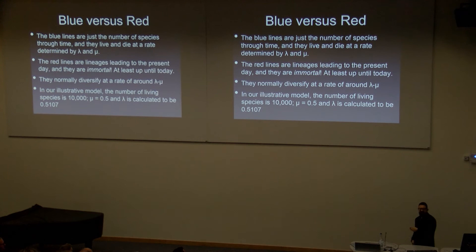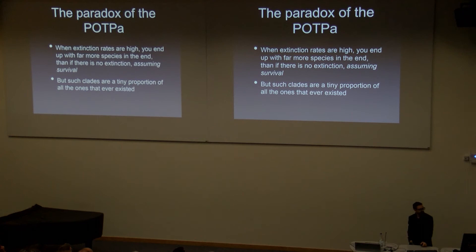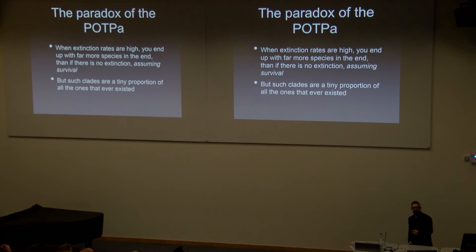So the paradox is that the higher the extinction rates are, the harder it is to survive the beginning. But if you do, you end up with far more species than otherwise. It's like a really super competitive filter where only amazingly successful clades will survive. The worst conditions mean fewer things survive, but the ones that do will be absolutely enormous. The clades that actually survived are pretty rare - only a few percent in our modelling actually survive to the present day.